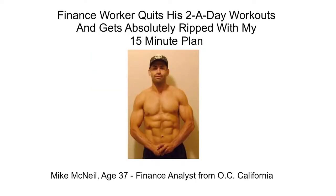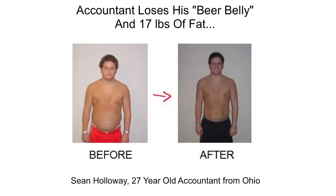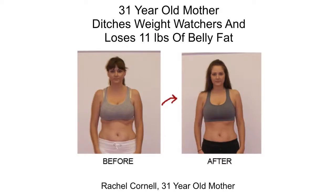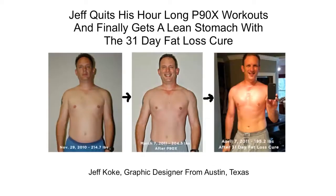Mike McNeil, a 37-year-old finance worker from Orange County, California, actually ditched his two-a-day workouts and was able to get the first six-pack of his life with the 31 Day Fat Loss Cure. Here we have Sean, who's a 27-year-old accountant. Sean was always in good shape, but throughout college he put on more weight than he would have liked. After using the 31 Day Fat Loss Cure, Sean was able to get rid of his beer belly and erase numerous years of too much drinking in just a few weeks. Then we have another lady, Rachel Cornell. Rachel was a previous Weight Watchers user, but after ditching Weight Watchers and using the 31 Day Fat Loss Cure, she was able to get rid of her love handles and lose 11 pounds of pure fat from her stomach. And here's one of my favorites, Jeff Kokey from Austin, Texas. Jeff ditched his hour-long P90X workouts for the 31 Day Fat Loss Cure and was able to get down to his lowest weight since high school. You can even see his abs starting to show through.